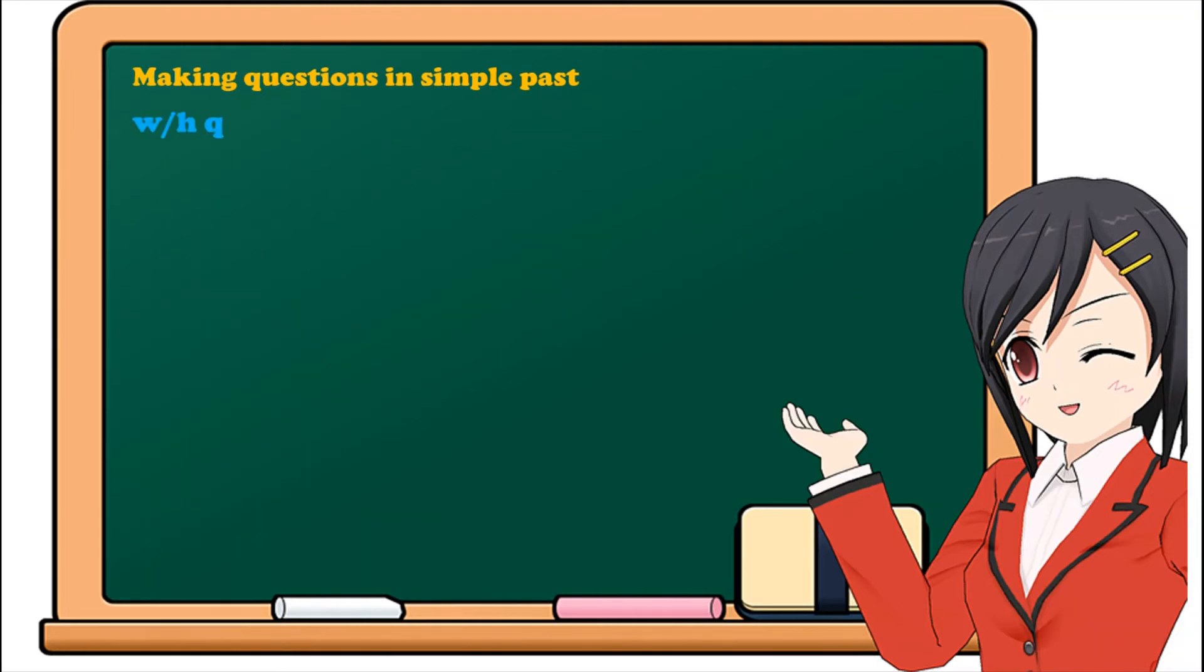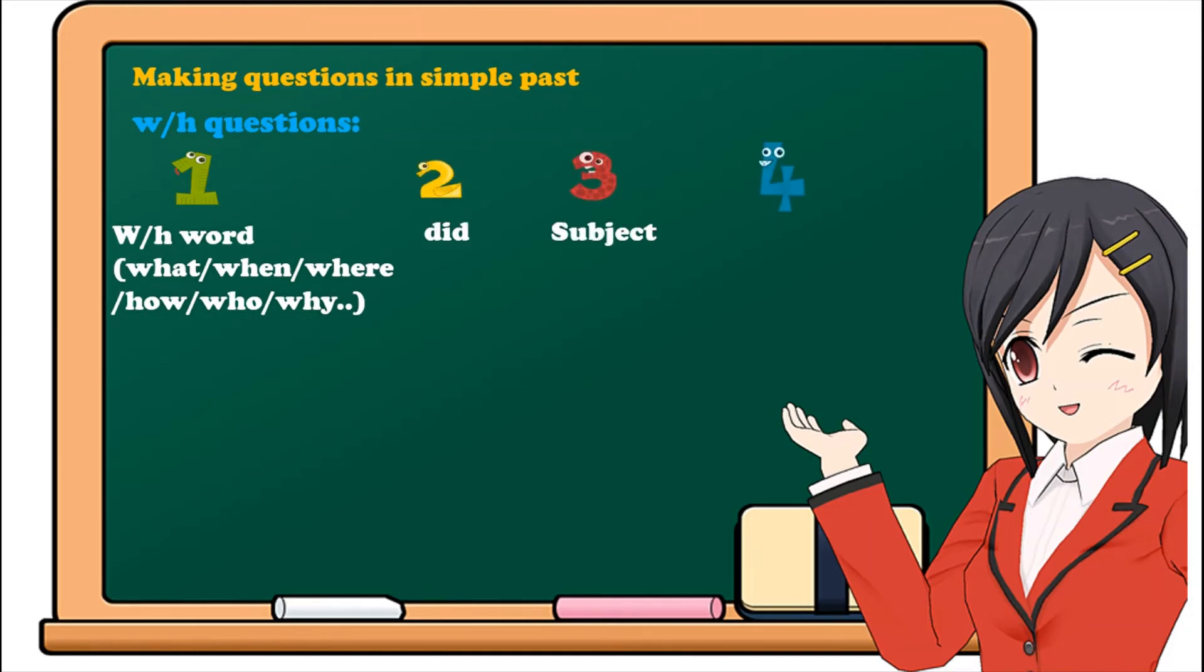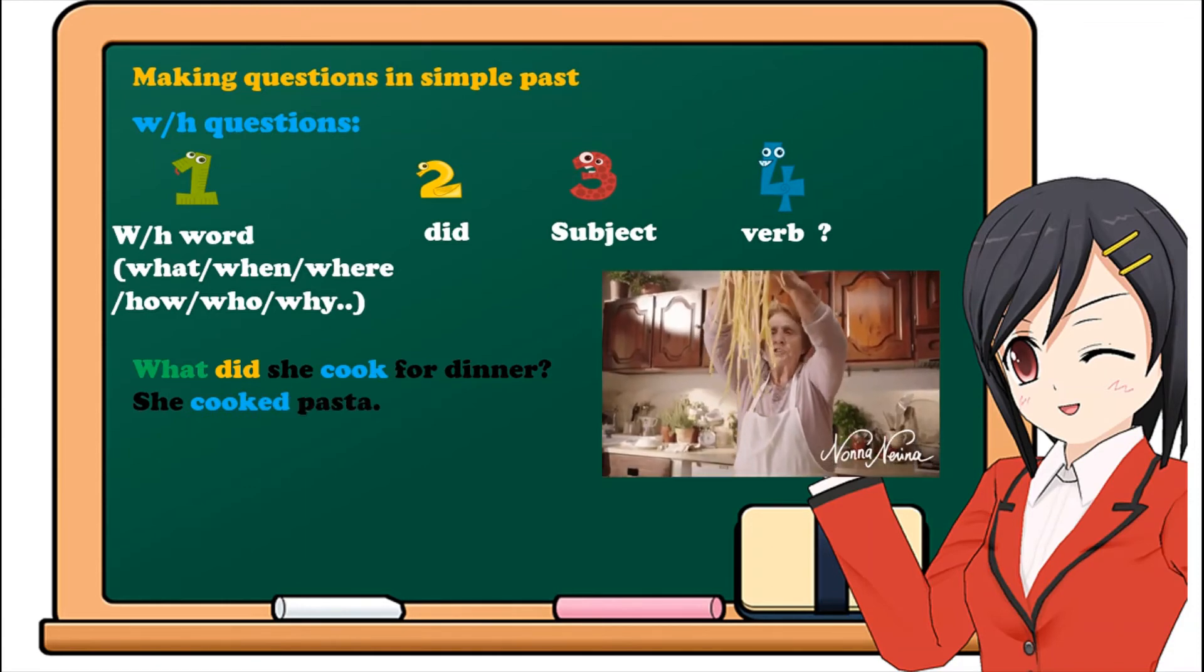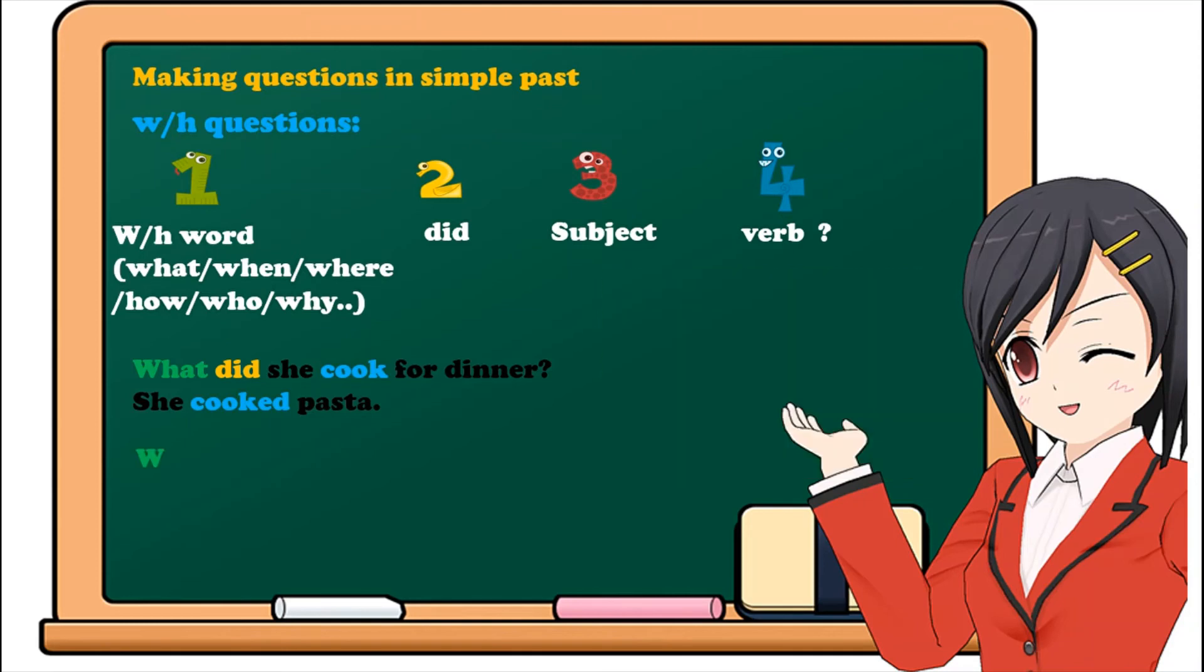For WH questions, we form them in the following way: Number 1, the WH word - what, when, where, how, who, why, etc. Then, did. Then, the subject. Then, the verb. For example, what did she cook for dinner? She cooked pasta. Where did you park your car? I parked it near the market.